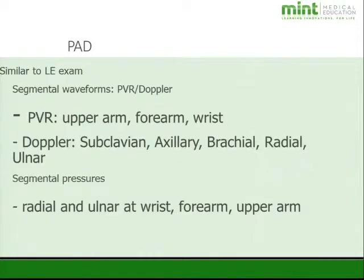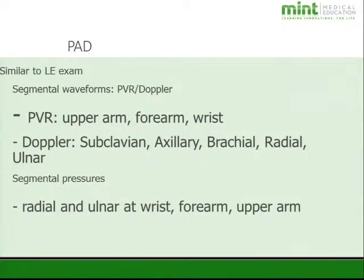The upper extremity PAD exam is very similar to the lower extremity. We do segmental waveforms first, whether PVRs or Doppler. For PVRs, cuffs go on the upper arm, forearm, and wrist. For Doppler waveforms, we obtain signals at the subclavian, axillary, brachial, radial, and ulnar arteries. Then we obtain pressures starting from the wrist — radial and ulnar — then forearm and upper arm pressure.